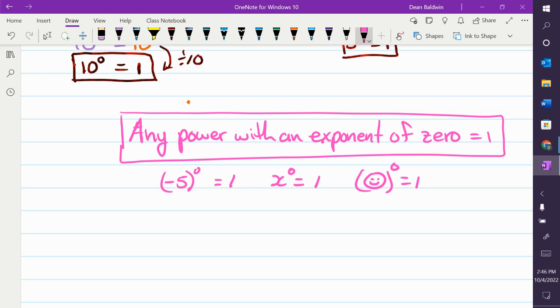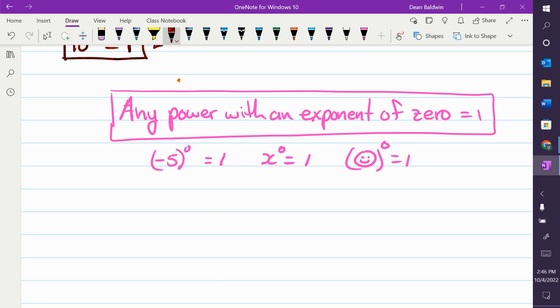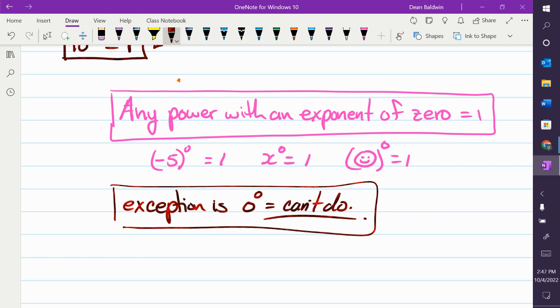There is one exception when it's not, but you don't have to deal with it. It's when the base is 0. The exception, you don't even have to write this down because it's not part of this course. 0 to the power of 0. That is indeterminate. You can't calculate. So we'll just say can't do. If you want to look more into that, if you go to university, you will look into more of those things. We look at a tiny bit in calculus, but not really. But that is the only thing. You will not see that. What you will see is stuff like this. Anything to the 0 power is 1.